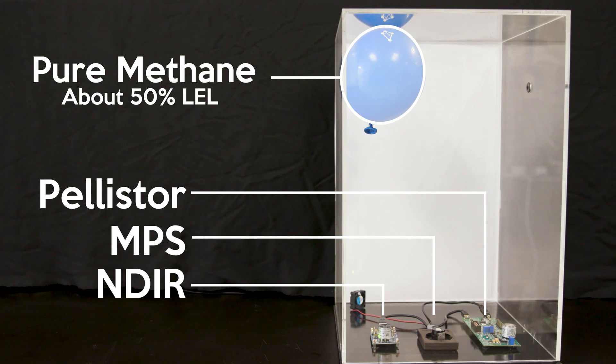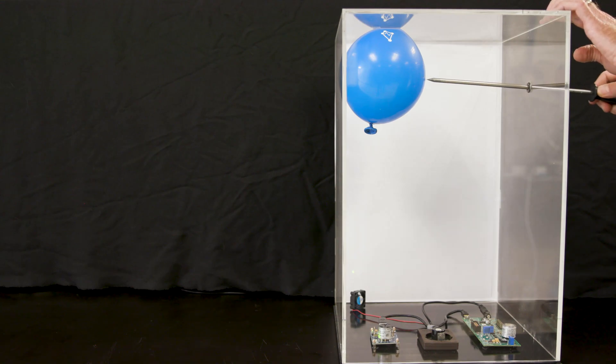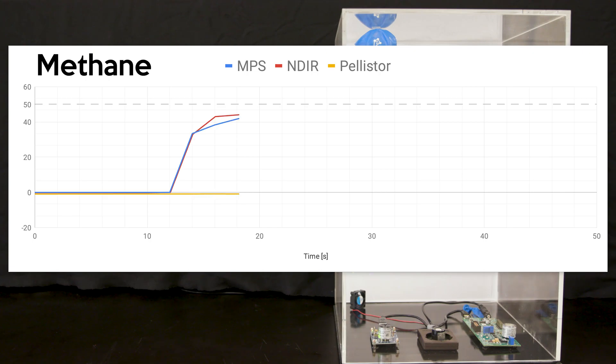So what I'm going to do now is pop that balloon and the fan will quickly circulate that methane in the volume, and we should see all three sensors respond relatively accurately to this, which is the gas to which they were all calibrated. So the methane's circling around, and we'll see that all three sensors are responding to that methane and are all reasonably accurate around 50% LEL.